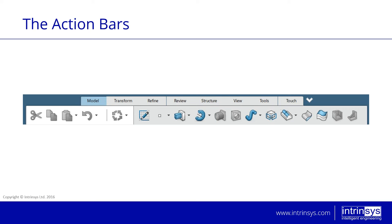If you've used CATIA before, you'll remember the toolbars. In this case, we no longer have toolbars — what we have instead is action bars. The action bars are linked to the bottom of the screen, and we navigate through them using tabs. Each tab has some assigned tools that you can access.